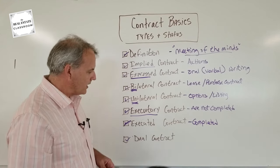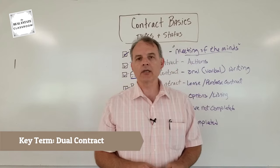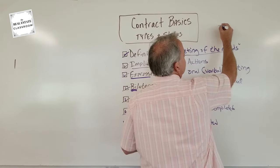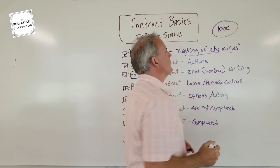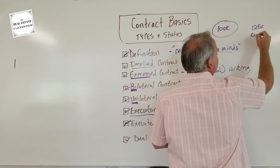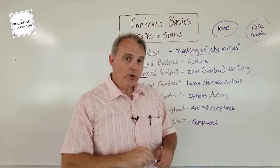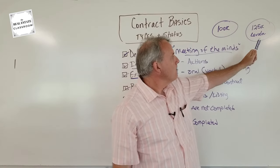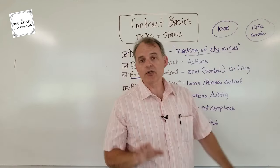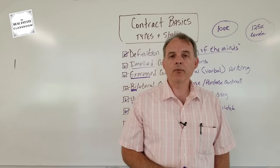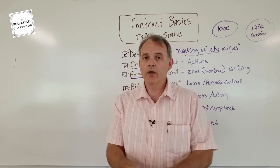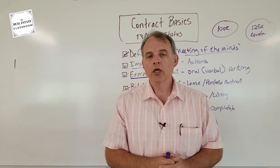The last concept is a dual contract, which the licensing exam has been asking about. Dual contract means two or more contracts — typically two. For example, the buyer and seller agree to a purchase price of $100,000 and write up a purchase contract, but then write a second one for $125,000, which goes to the lender. The real purchase price is $100,000, but the lender believes it's $125,000. This is fraud and it is not legal. On a licensing exam, always determine whether a question refers to dual contracts or dual agency — they are two completely separate concepts.